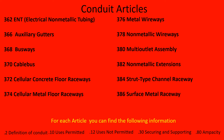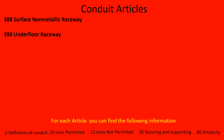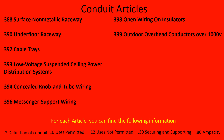Article 386 is surface metal raceway. 388 is surface non-metallic raceway. 390 is underfloor raceway. 392 is cable trays. 393 is low voltage suspended ceiling power distribution systems. 394 is concealed knob and tube wiring. 396 is messenger support wiring. 398 is open wiring on insulators.